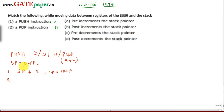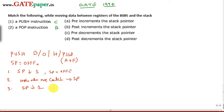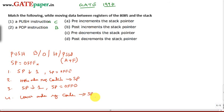When you execute a push instruction — push B, push D, or push H — the higher order register contents are pushed down to the stack pointer location. Then the stack pointer is decremented by 1, making the present stack pointer 0FFD. After that, the lower order register contents are copied into the present stack pointer location.